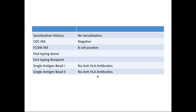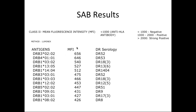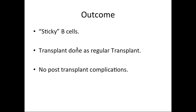Case one: a patient with no sensitization history. CDC crossmatch was negative, but flow crossmatch was positive. When we did the single antigen bead, there were absolutely no anti-HLA antibodies — consistent with no sensitization history. The B-cell flow was a sticky B-cell result. We did the single antigen bead, which was completely negative for both class one and class two. We proceeded with a regular transplant with no desensitization and no extra immunosuppression, and the transplant went well with no post-transplant complications.